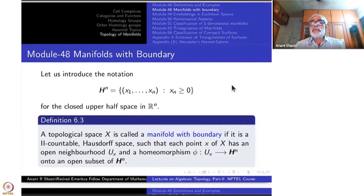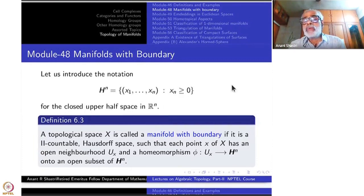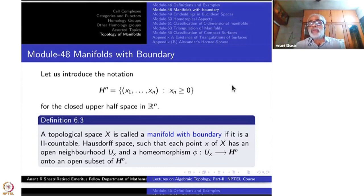Today we shall continue the study of manifolds with boundary. The basic thing here is instead of the model R^n, we shall use the half-space model H^n. This H^n denotes all points of R^n where the nth coordinate is greater than or equal to 0. So if n is 1, this is just the closed ray from 0 to infinity.